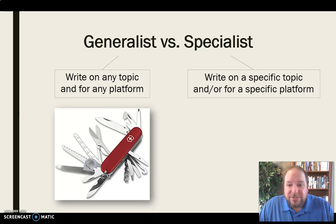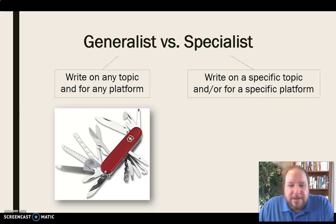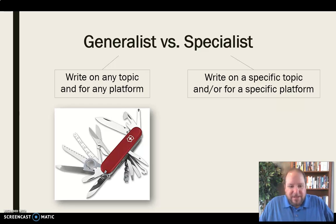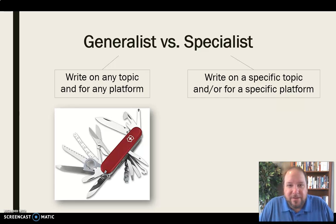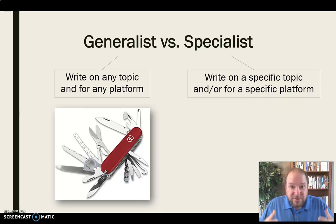A specialist or somebody who has a niche would write on a specific topic and or for a specific platform. They're focusing on just politics, or just science, or just celebrities, really digging in and getting their tentacles in every part of that world to the exclusion of all others. If you're hyper focused on celebrity gossip and entertainment, you're not just going to suddenly report on tensions in the Middle East or local politics. You could theoretically do that, but you're not going to be as prepared because you've invested everything in this one topic.